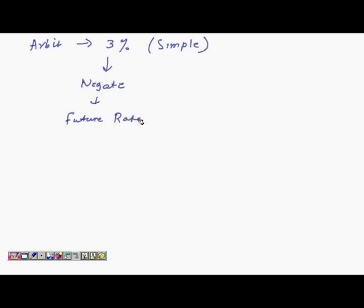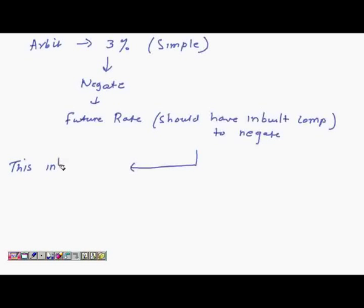So let's come back to the note file and write it down again. What we are saying is that as an arbitrager you have made an easy 3% just by playing that simple game of taking a loan and investing in India. Now, to negate this, the future rate should have an inbuilt component to negate this. And this inbuilt component is what you call interest rate differential.